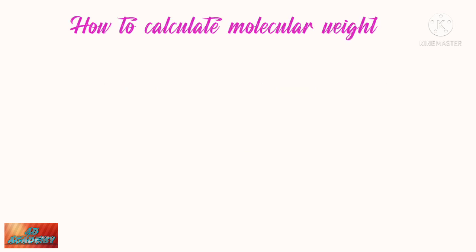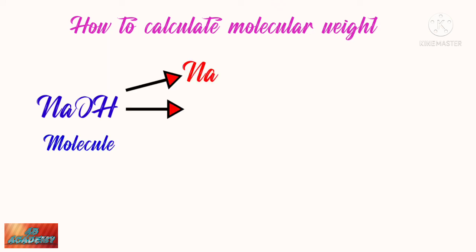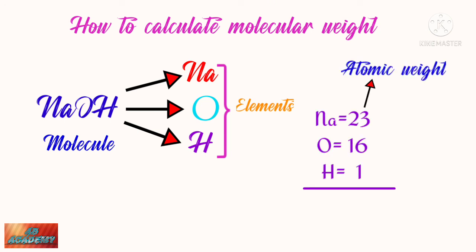Let's see how to calculate molecular weight. Let us find the molecular weight of NaOH molecule. This molecule has 3 elements: sodium, oxygen and hydrogen. We have to consider the atomic weight of each element. The atomic weight of sodium is 23, oxygen is 16 and hydrogen is 1. The total will be 40 grams. The molecular weight can be expressed in grams. This is a simple molecular weight calculation.